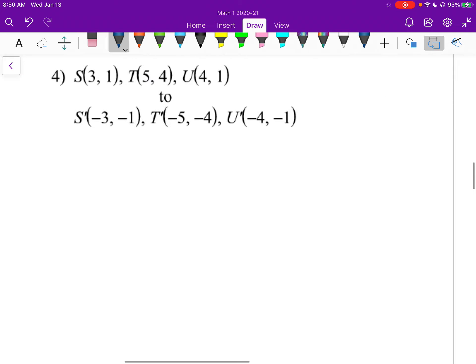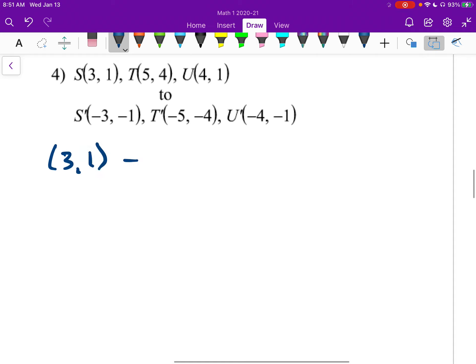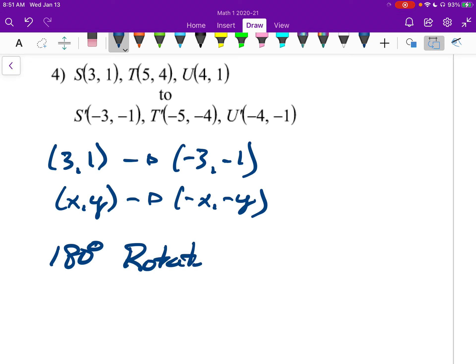Number four. S and S prime. S is at 3, 1, and it goes to negative 3, negative 1. So we have x, y, and it looks like they both just went negative. So it's going to be negative x, negative y. So what would that be? That would be a 180 degree rotation. And we can say this is clockwise or counter. Right? Because they'd be the same thing.